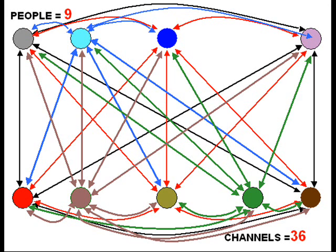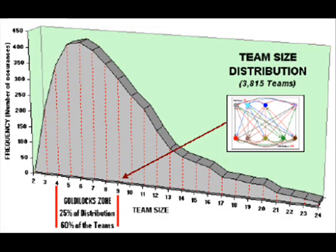Some are smaller, some are bigger, but they average out to nine people. Once again, this is the graphic of the distribution of team sizes. The Goldilocks zone runs from four to nine people.